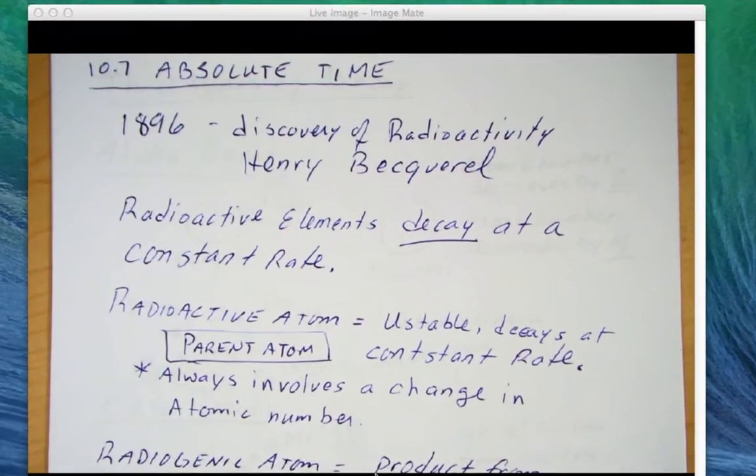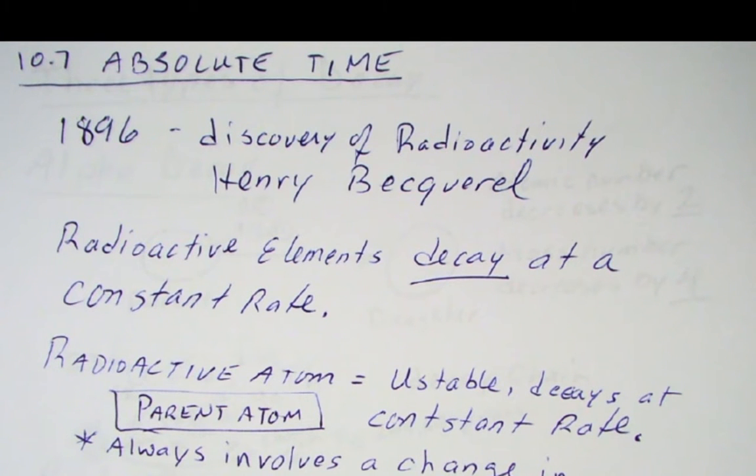Sometimes it's called numerical time, and remember this one's based on the atomic clock, on radioactivity. And in 1896, radioactivity was discovered by Henri Becquerel, and that really allowed scientists to try to figure out how this radioactivity worked.